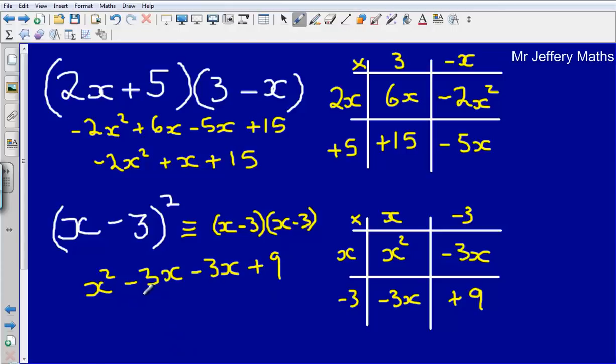Then tidying that up, we can see that the minus 3x and the minus 3x will simplify. We can collect these two things together, and that simplifies to x squared minus 6x plus 9.